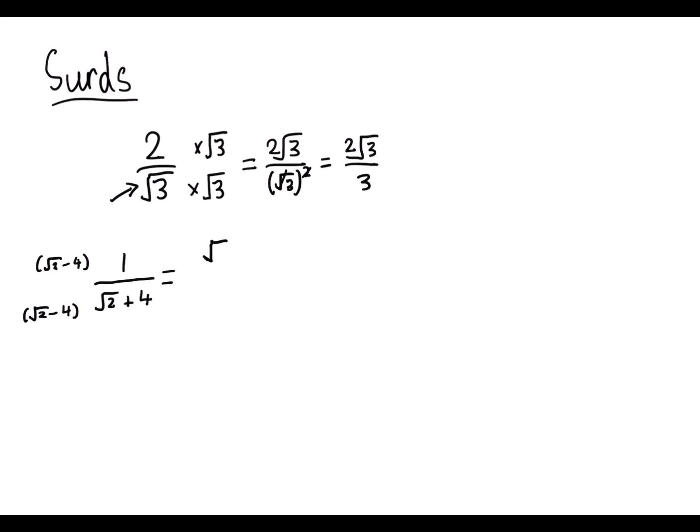So on the top, we're obviously just left with root two minus four, as we're just multiplying by one. At the bottom, we have, if we expand these brackets, root two all squared plus four root two minus four root two, and then minus 16.